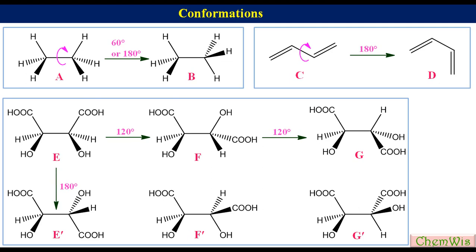120 degrees rotation will convert E prime to F prime, and F prime to G prime. 180 degrees rotation of F will give F prime, and G will give G prime.